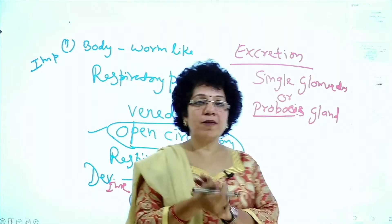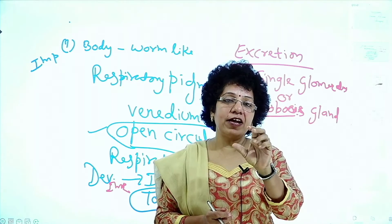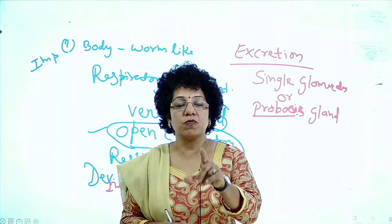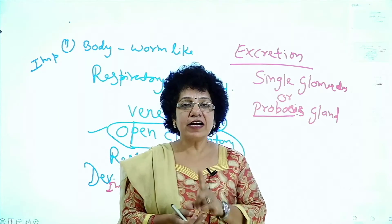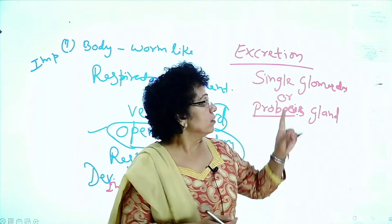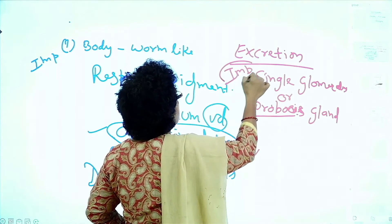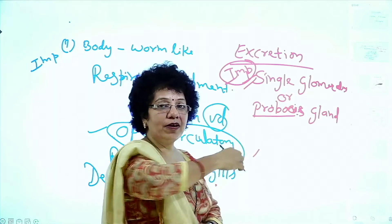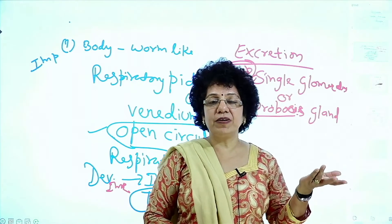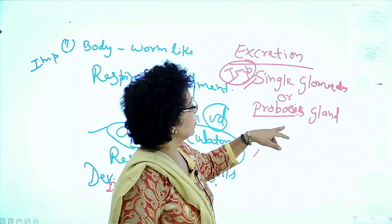The main features of Hemichordata: one, the notochord-like structure present in the buccal cavity, also called buccal diverticulum or stomocord. Two, the body is divided into proboscis, collar, and trunk. Three, excretion occurs by single glomerulus or proboscis gland — very important.